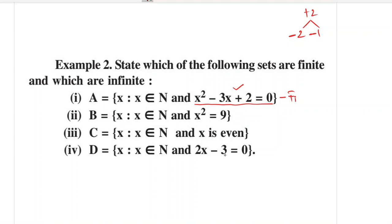Next: x such that x belongs to natural numbers and x² = 9. Solving gives x = ±3. But among natural numbers, only +3 qualifies — minus 3 is not a natural number. So this is a finite set and also a singleton set.